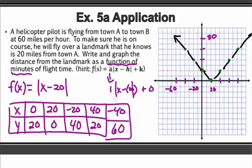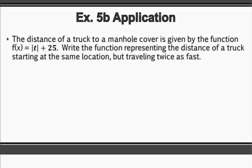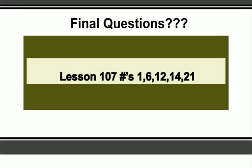Write and graph the distance from the landmark as a function of minutes of flight time. You can see this would be my function, and you can see the graph. You can try the next one yourself. Your assignment for next time is Lesson 107, numbers 1, 6, 12, 14, and 21.